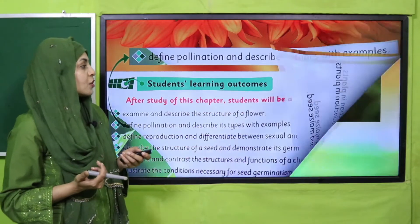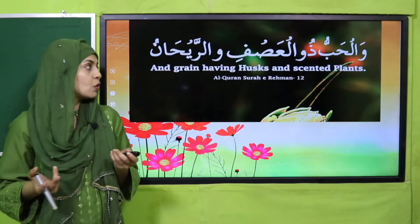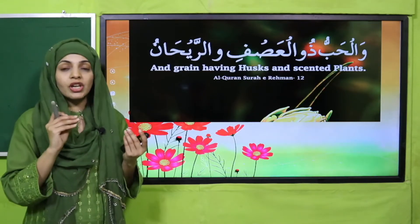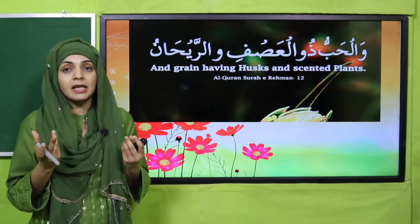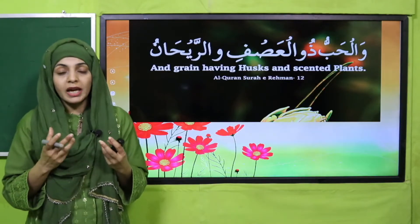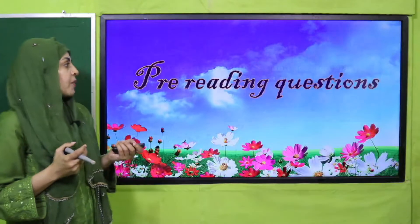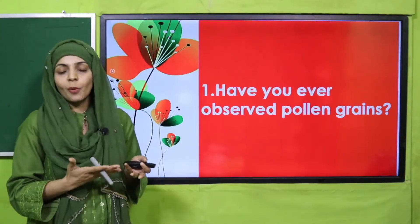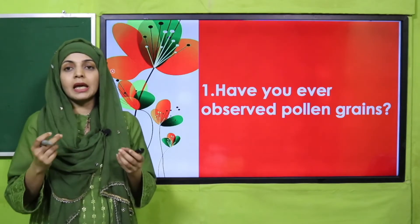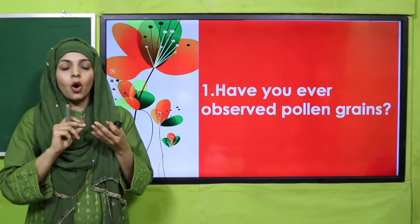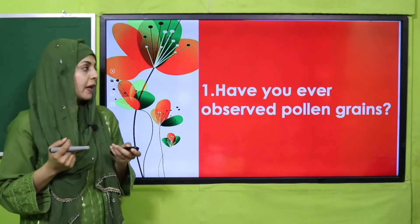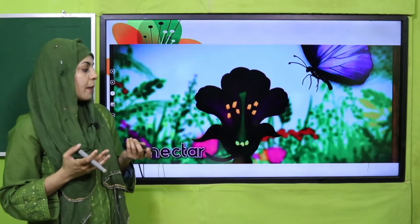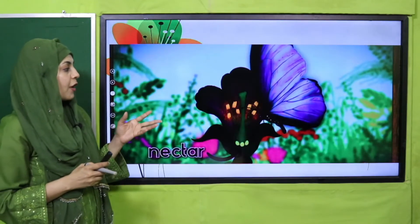Allah says in the Quran: 'And grain having husks and scented plants.' Allah Ta'ala has made plants that are fragrant, like flowers. For pre-reading questions: have you ever observed pale pollen grains? They are very fine particles, found inside the anther. You need a magnifying glass to observe them properly.